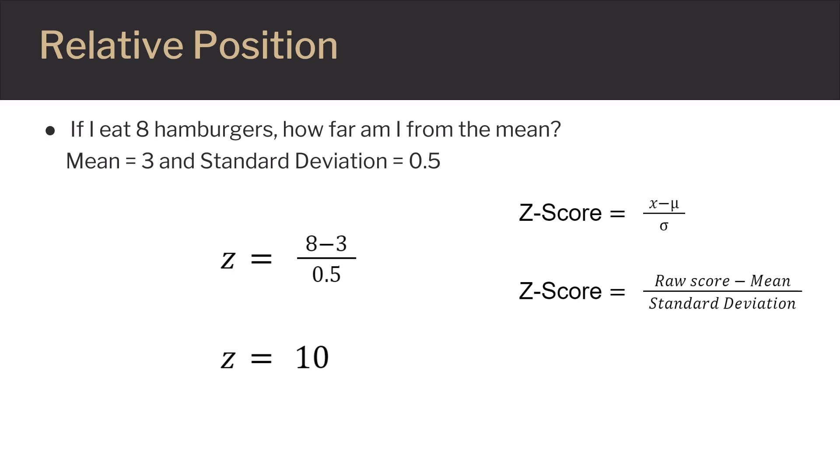Z-scores can also be used to compare relative positions. For example, if I eat 8 hamburgers, how far am I from the mean? In this example, mean equals 3 and standard deviation equals 0.5. If I plug the values into the Z-score formula, that would give me Z equals 8 minus 3, all divided by 0.5. Then, on a calculator, that would give me Z equals 10.